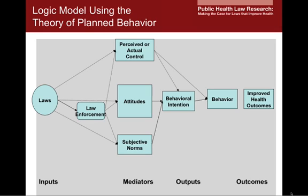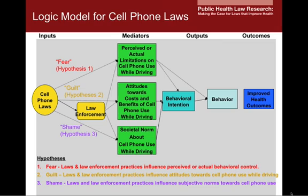You can see from the various arrows that there can be complex relationships between each of the blocks. The arrows can help you think about how to construct your hypotheses in terms of direction and also think about magnitude of effect. Here I'm offering an example of the theory of planned behavior and how it can explain how a law restricting or prohibiting cell phone use while driving can result in a behavior change and improvements in health outcomes.